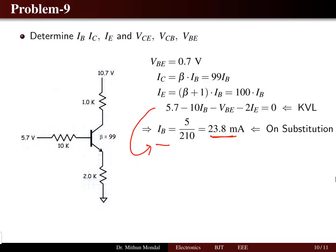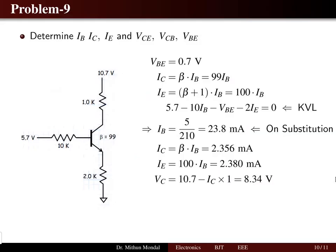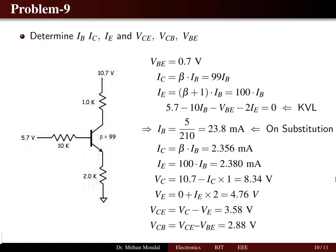With the base current known, substituting into the equations: collector current equals 2.356 milliamps and emitter current equals 2.380 milliamps. The collector voltage is determined from KVL as 8.34 volts, and the drop IC times 1 kilohm is calculated. Applying KVL for the emitter voltage and collector-to-emitter voltage, VCE equals VC minus VE, giving 3.58 volts. Finally, the collector-to-base voltage equals collector-to-emitter voltage minus base-to-emitter voltage, which is 2.88 volts.